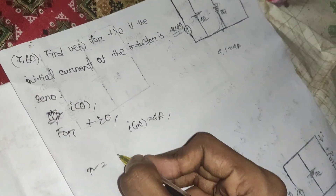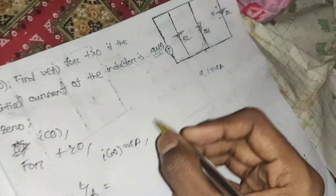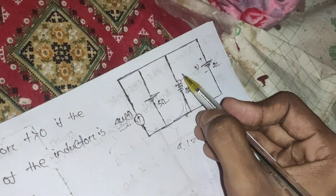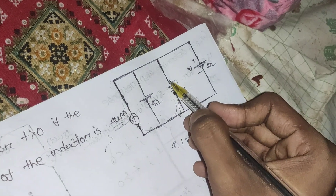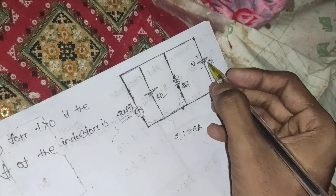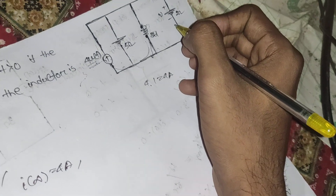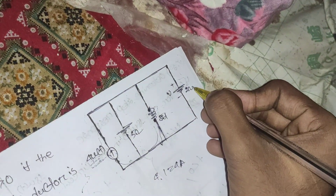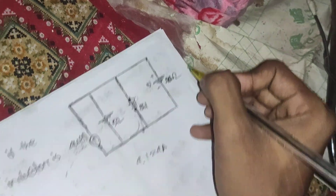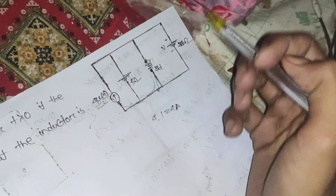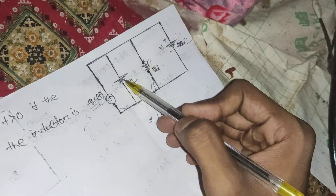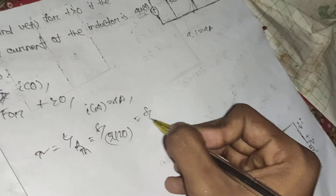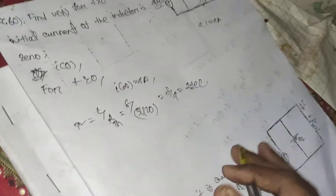For tau = L/R_th, the inductance L = 8 H. For the Thevenin resistance at those two terminals, the 5-ohm and 20-ohm resistors are in parallel: R_th = (5×20)/(5+20) = 4 ohms. So tau = 8/4 = 2 seconds.